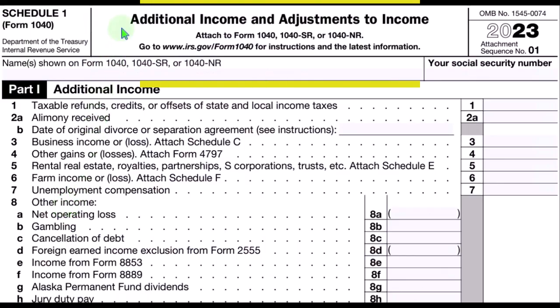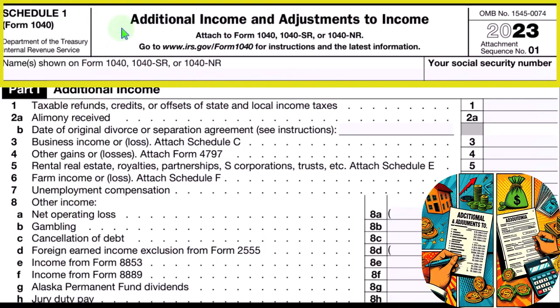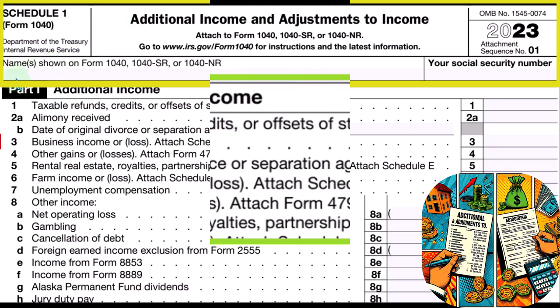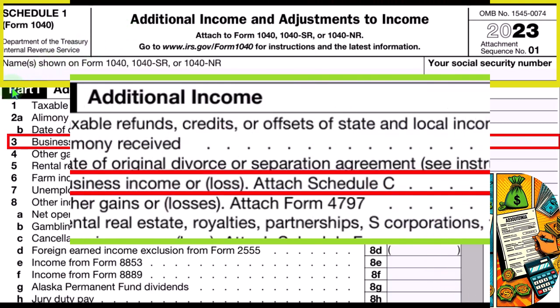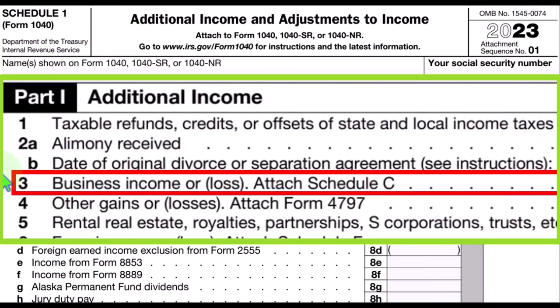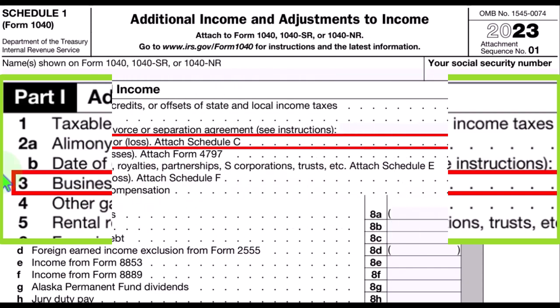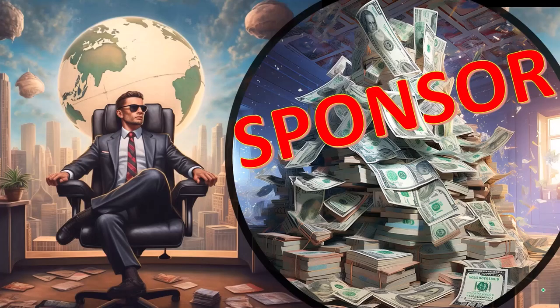Here is the Schedule 1 — additional income and adjustments to income, part number one, additional income, line three — business income or loss from the Schedule 1.